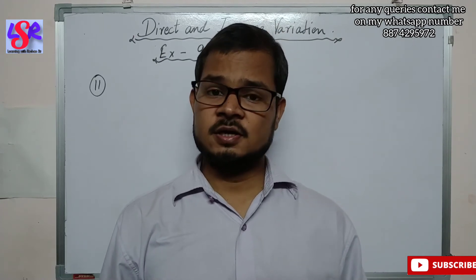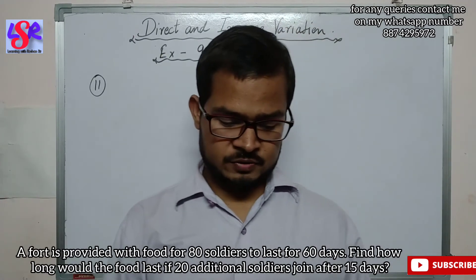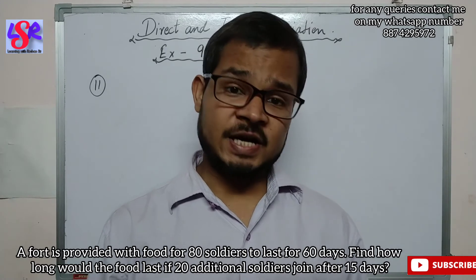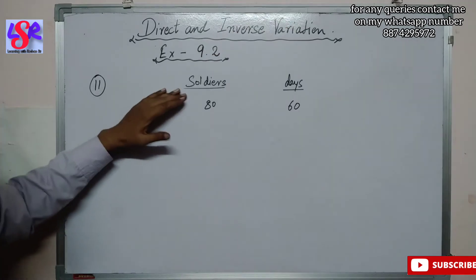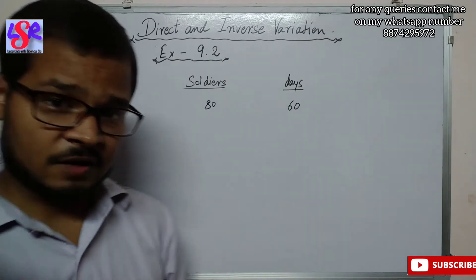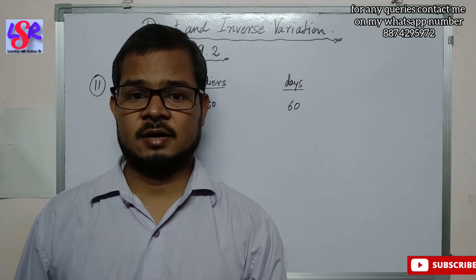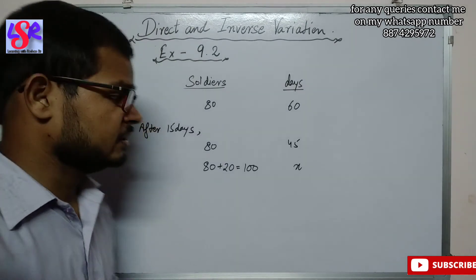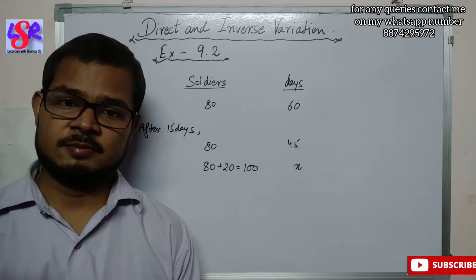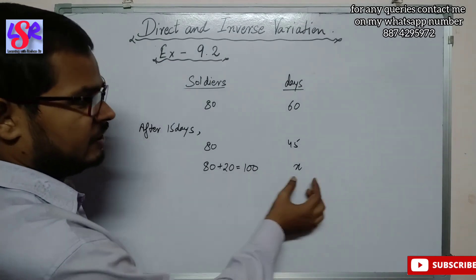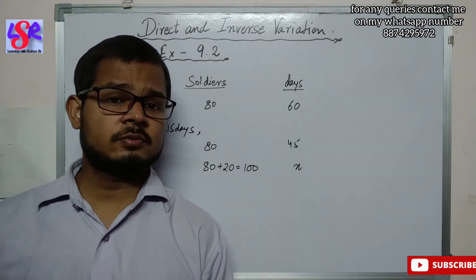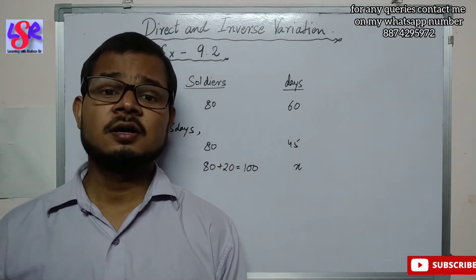Now let's move to question number 11. A fort is provided with food for 80 soldiers to last for 60 days. Find how long the food would last if 20 additional soldiers join after 15 days. Initially, 80 soldiers had food for 60 days. After 15 days, if only 80 soldiers remained, the food would last 45 more days (60 − 15 = 45). But 20 more soldiers joined, making 100 soldiers total. Since the food supply is fixed, more soldiers means fewer days — inverse variation.